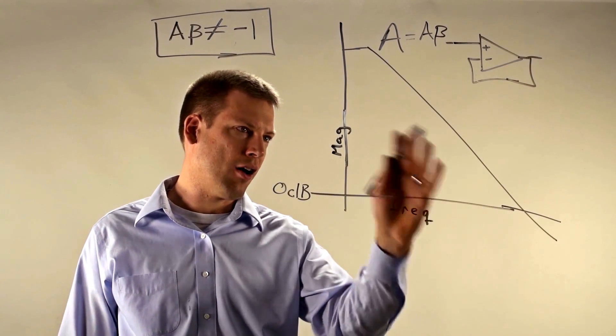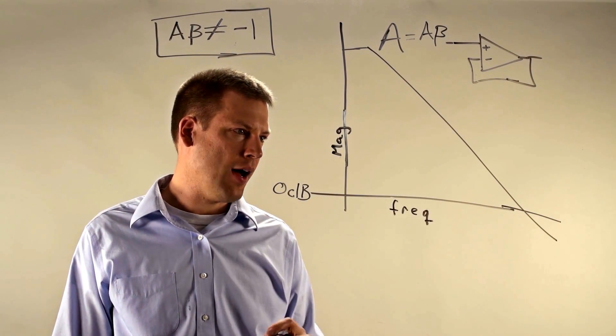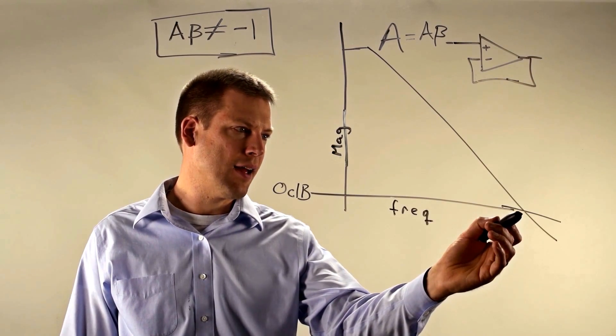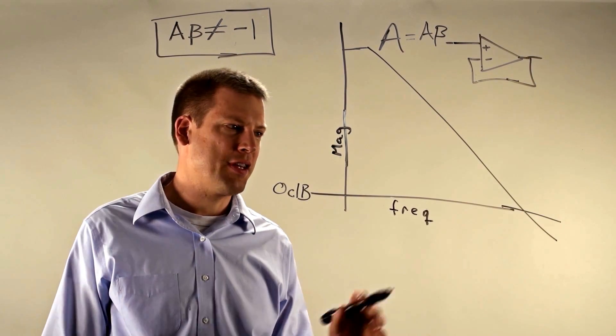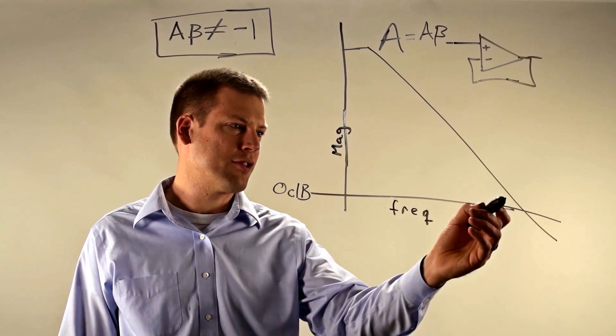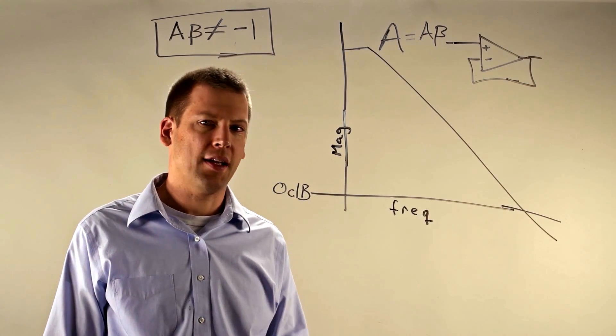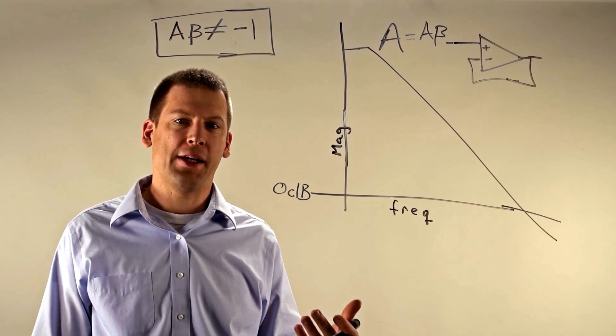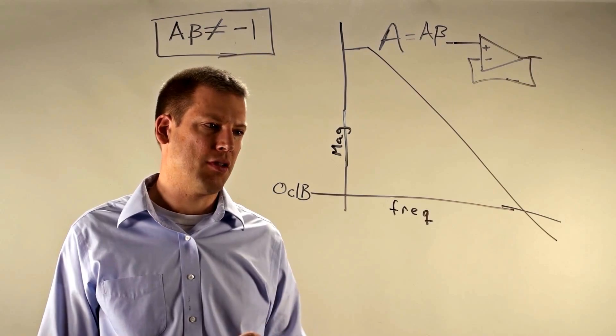And so we can just look at our plot of our op amp and see that when we cross the magic 0 dB line, we still have 20 dB per decade so we're good. Remember we want to avoid having 40 dB per decade crossing at the 0 dB line.